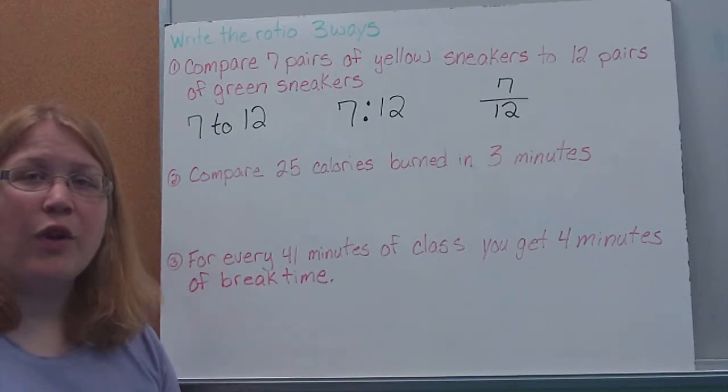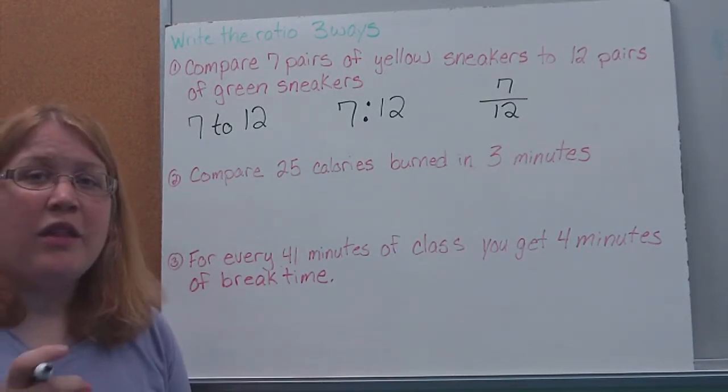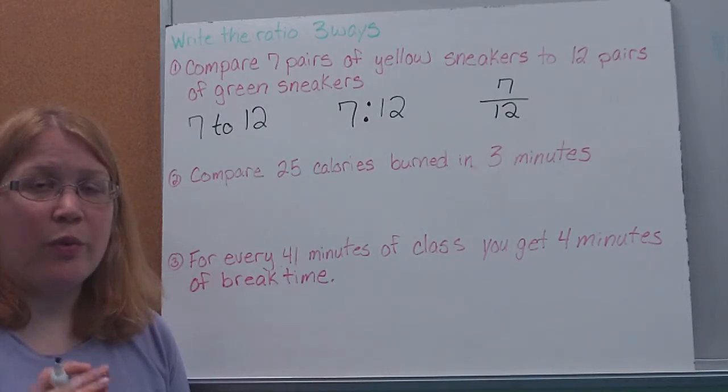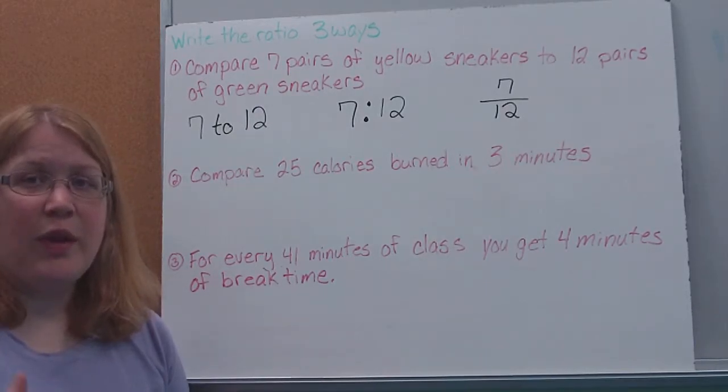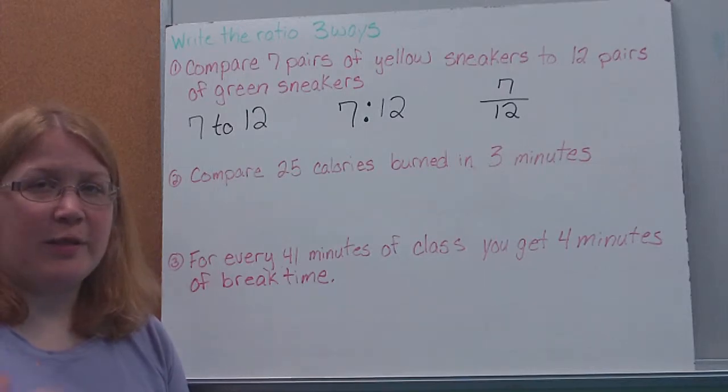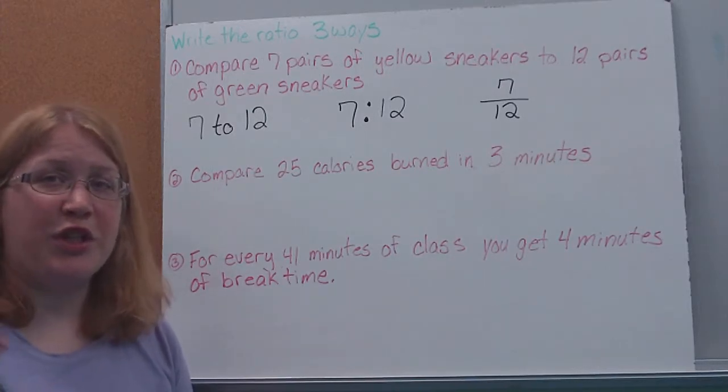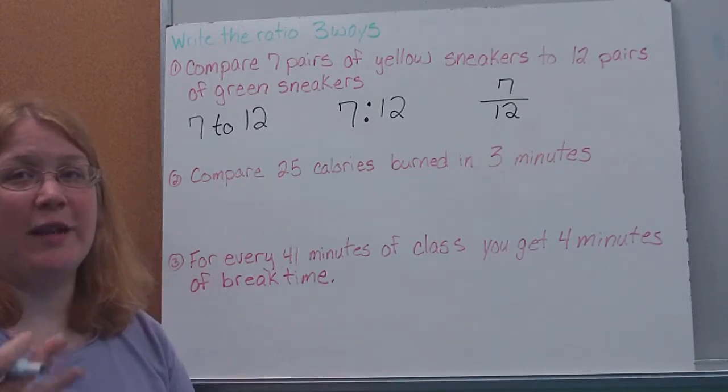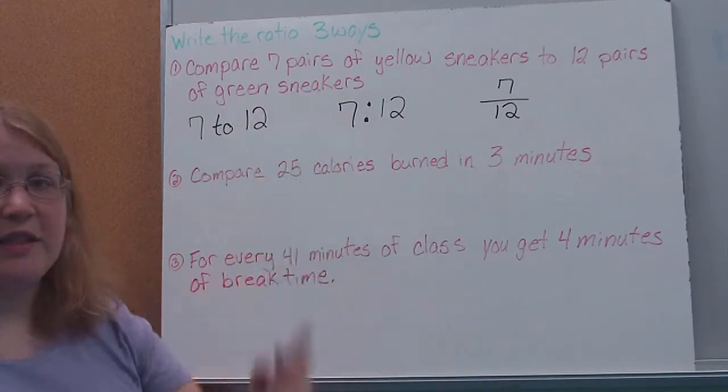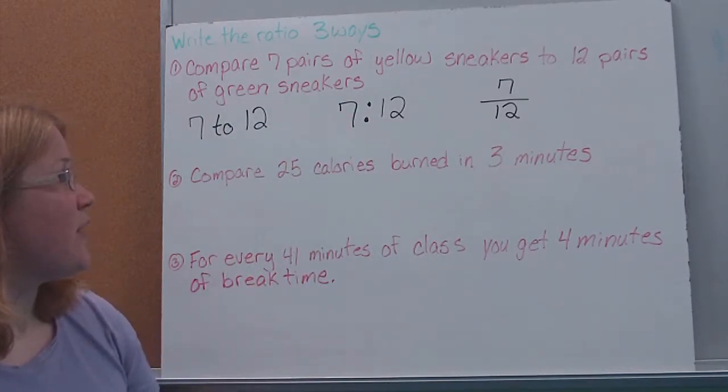Nice and simple right now. All we're doing is looking for our numbers, writing them as a ratio. The thing to remember though is it's going to be important which way we express our ratios. We want to make sure that we put the right numbers in the right spots. Because when we start getting into proportions, that's where we can get confused if we set them up backwards. Here, whatever was listed first, I'm going to list first.